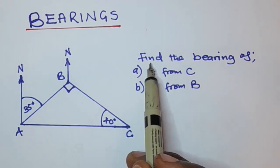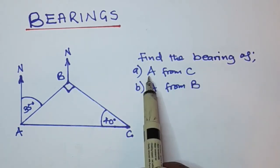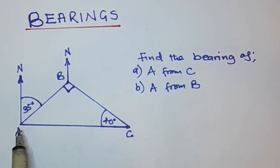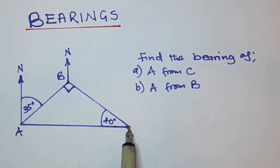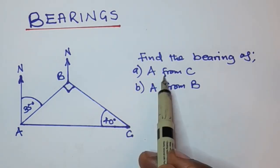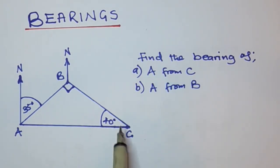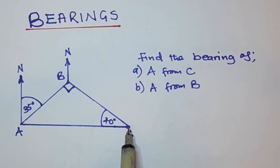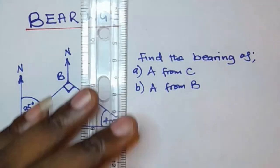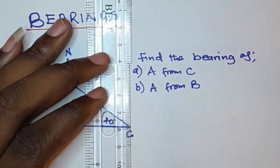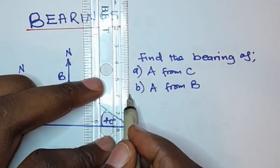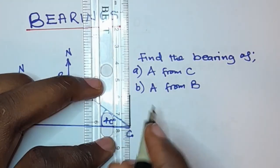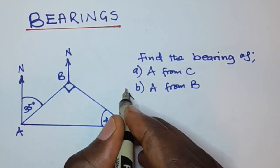The question says: find the bearing of A from C. They want you to find the bearing of A whilst standing at C. That's what it means when they say 'A from C' — they want you to find the bearing of A whilst you are standing at C. At the point where you are standing, you need to draw a north line, like this.